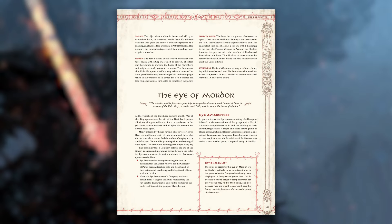Once your players start to foil the plans of Sauron, it might be time to bring in these optional rules for the Eye of Mordor. These rules could be used right from the start of a campaign, but it is recommended to use them a bit later on to represent Sauron becoming aware of the heroes.